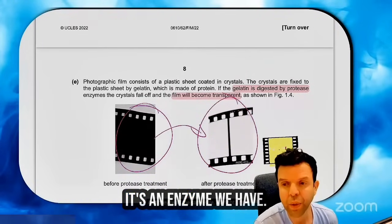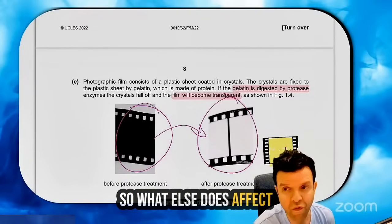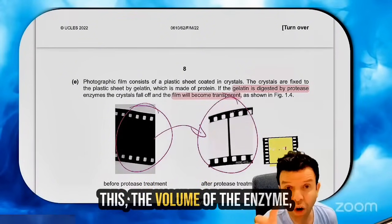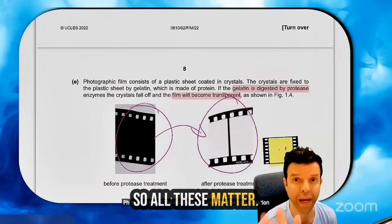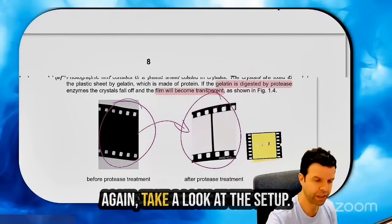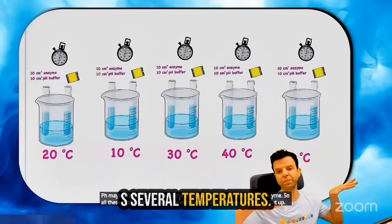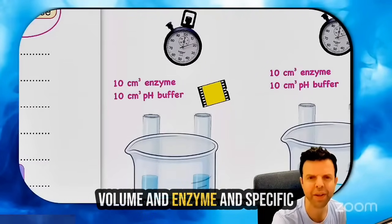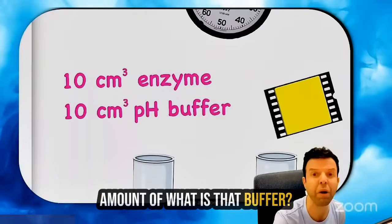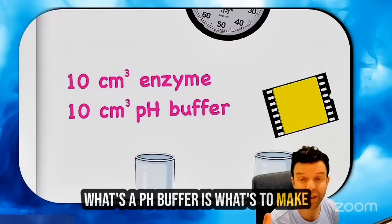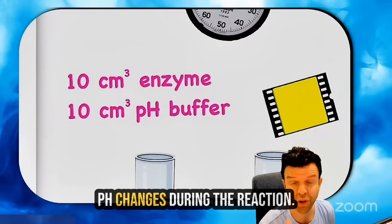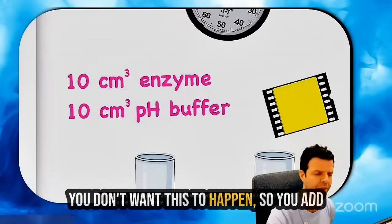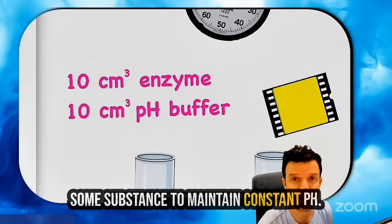It's an enzyme — we are changing the temperature. So what other factors affect enzyme reactions? pH maybe, the volume of the enzyme, the concentration of the enzyme. All these matter when it comes to enzymes. I have several temperatures, and each one has a specific volume of enzyme and a specific amount of buffer. What is a pH buffer? It's a substance to keep the pH constant, because pH changes during the reaction — when you break down protein you make amino acids, so the pH will change. You don't want this to happen, so you add a buffer to maintain constant pH.